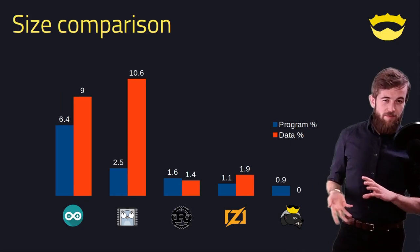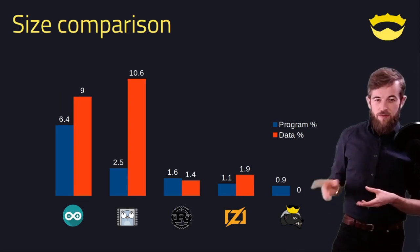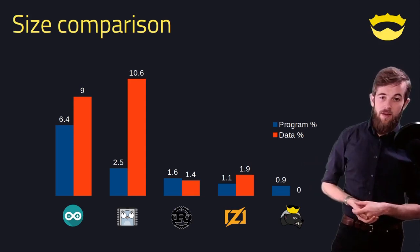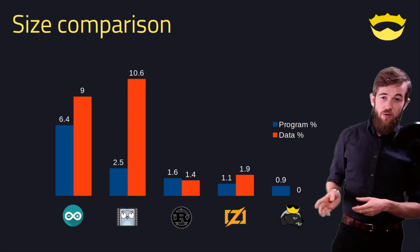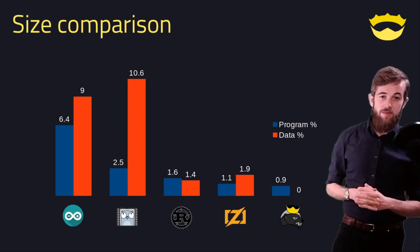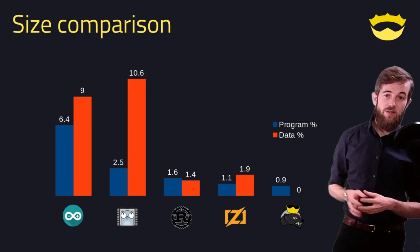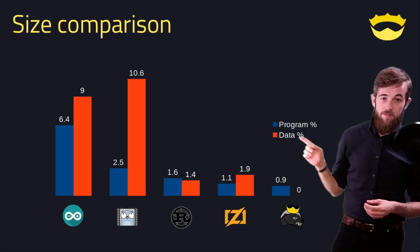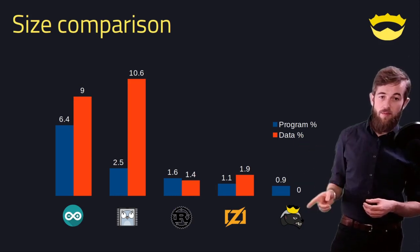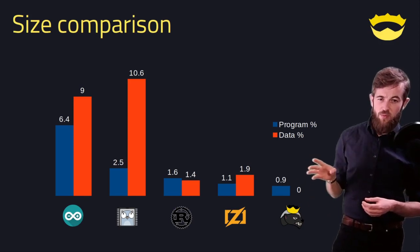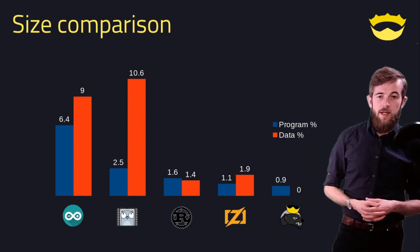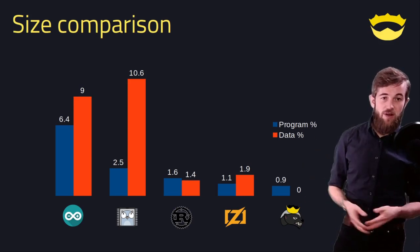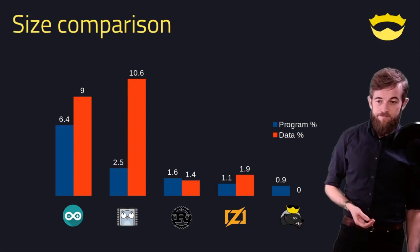That graph was a bit weird because we had 32 kilobytes versus 2 kilobytes, so here it is in percentages. As we can see, Go and Arduino actually take up about 10% of your data memory for this very trivial example. Arduino uses the same progmem trick for strings. So 10% of your RAM just for starting up the program — which is interesting.